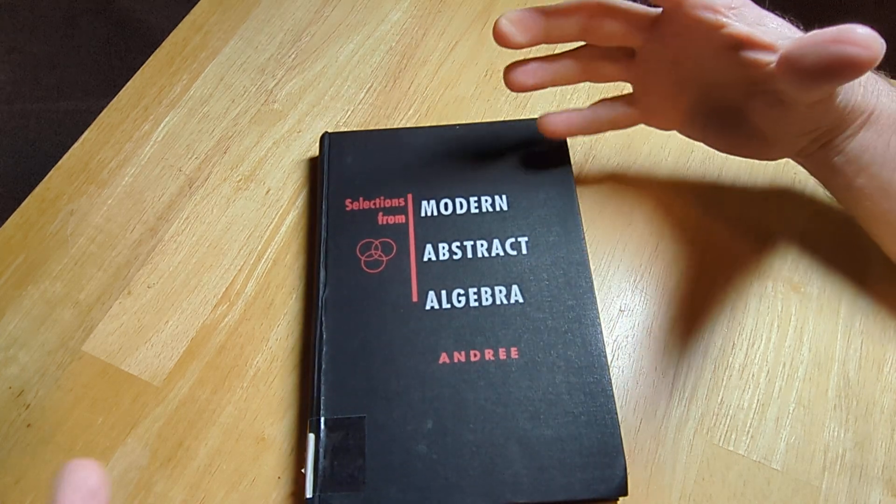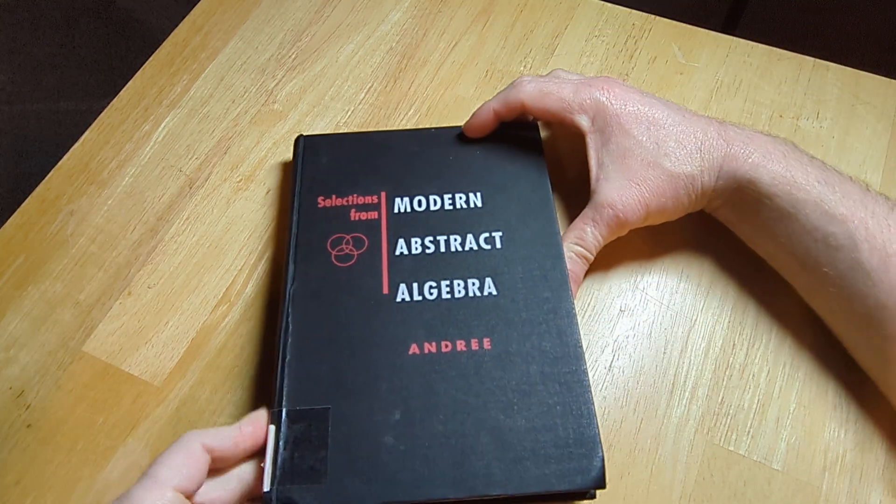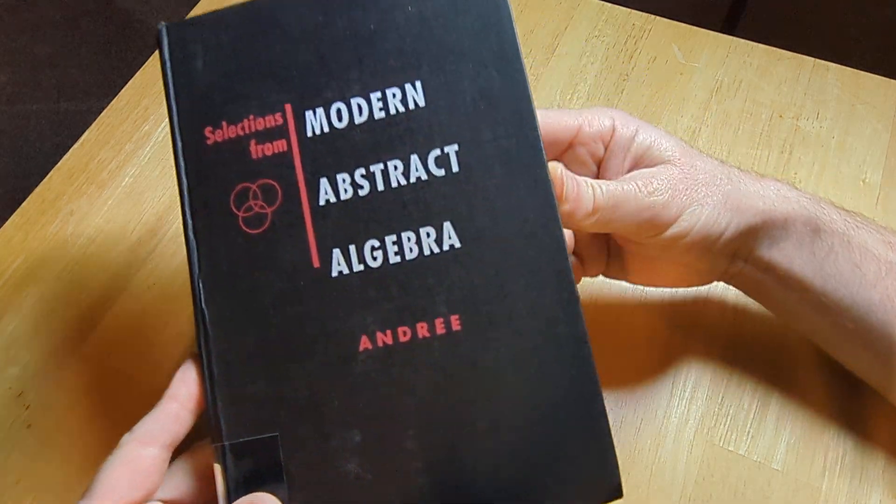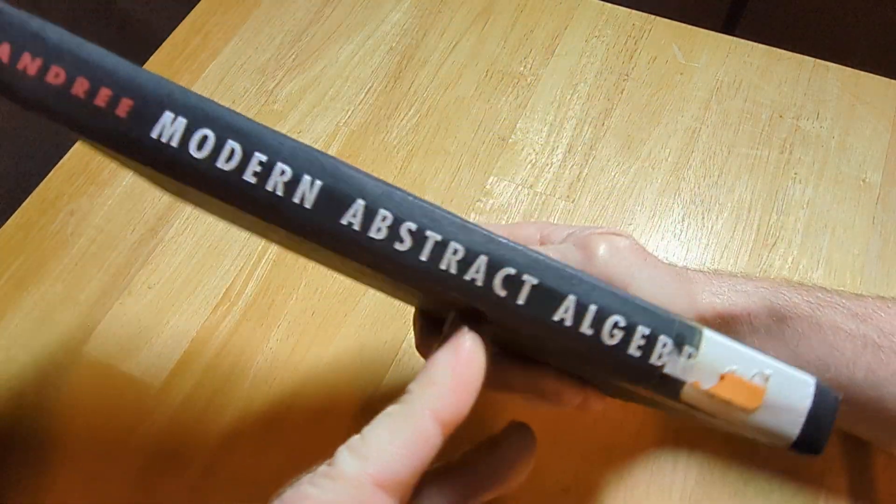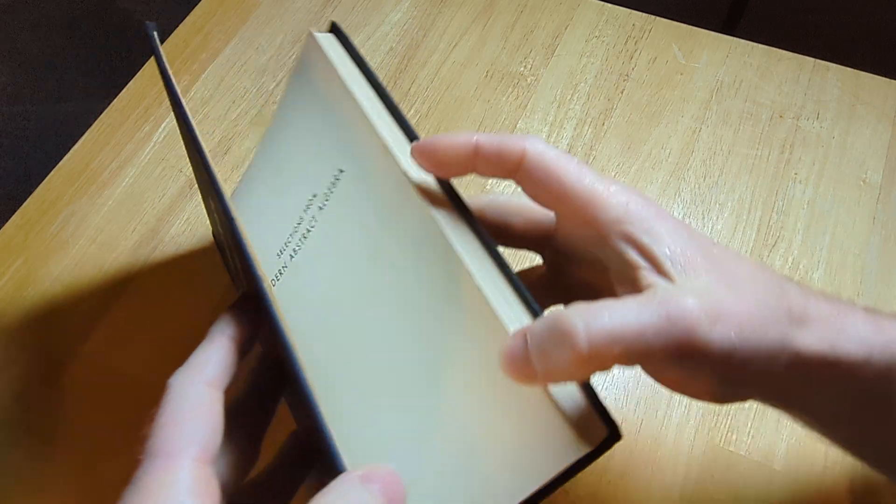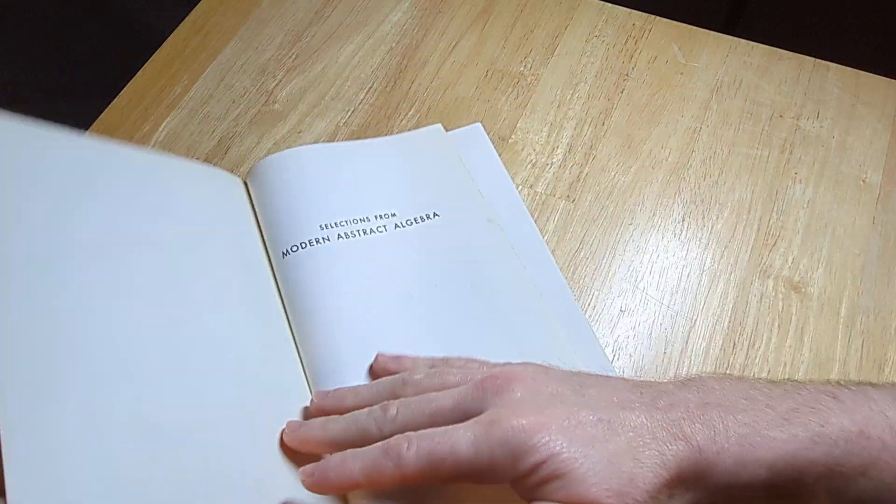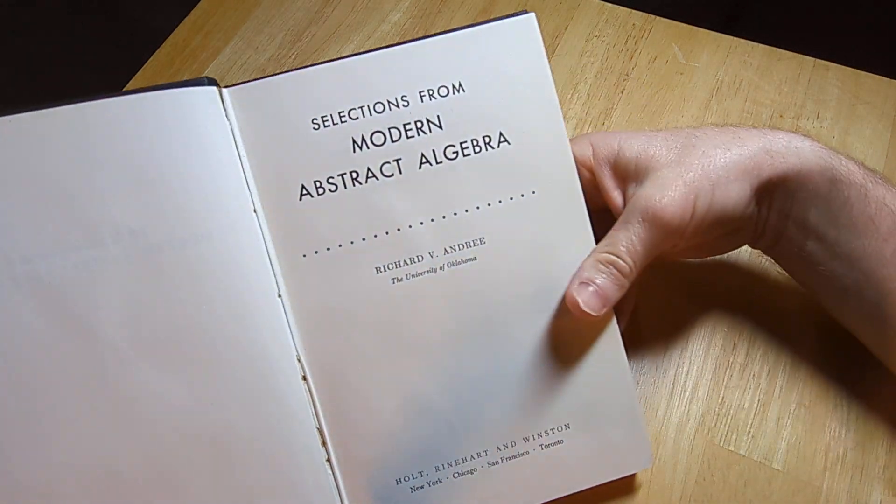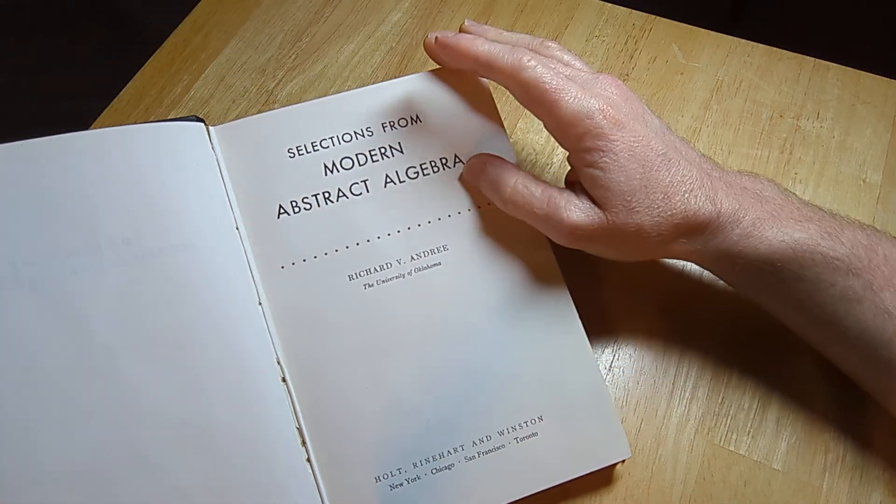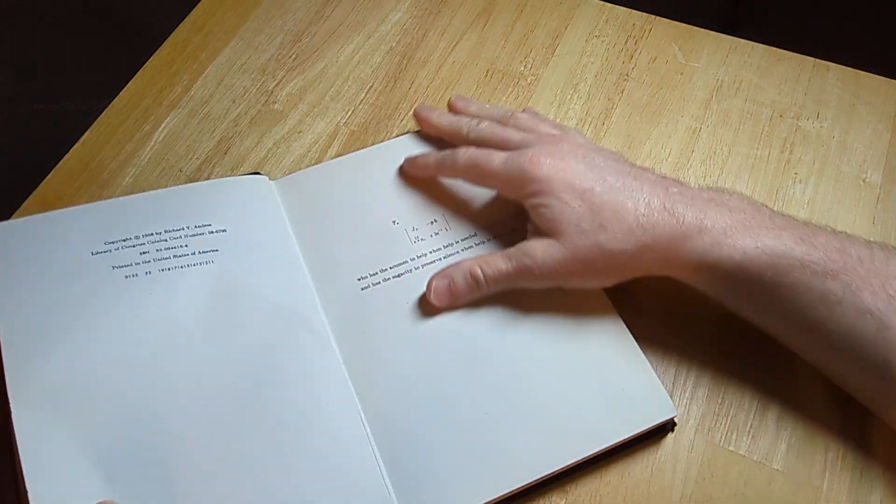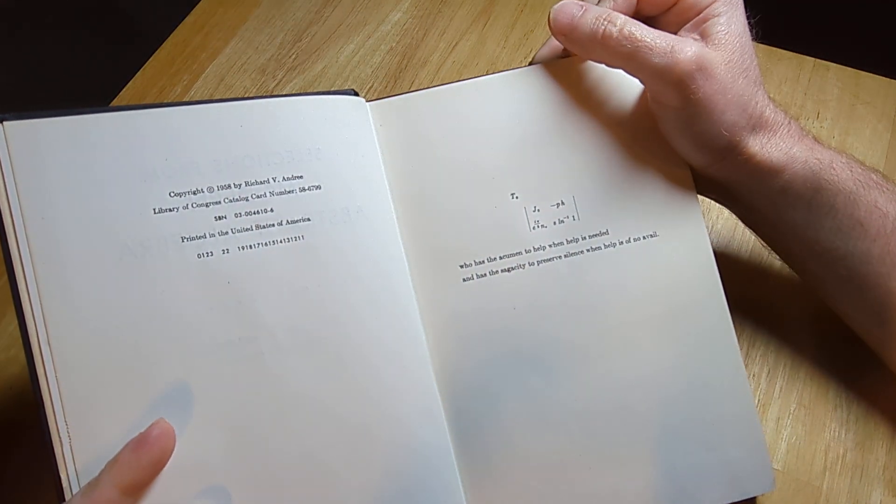Hello. In this video, we're going to look at this book. It is called Selections from Modern Abstract Algebra by Andrei. Nice black book. Richard V. Andrei, University of Oklahoma, 1958.